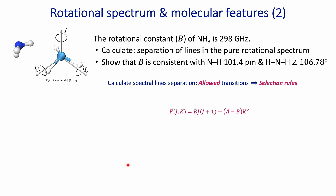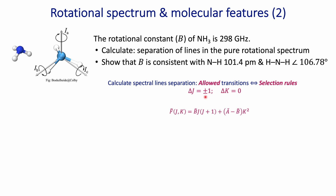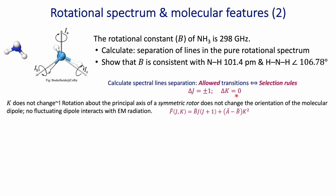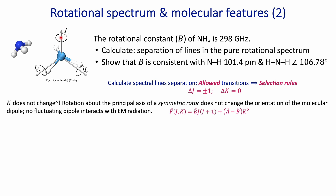Let's calculate the separation between lines in my spectrum. The question is: what are the allowed transitions? I need to apply the selection rules. For this type of molecule, the selection rules are ΔJ = ±1 and ΔK = 0. ΔK = 0 means the quantum number K doesn't change, because rotation about the principal axis of a symmetric rotor does not change the orientation of the molecular dipole in space. Particularly for ammonia, the dipole moment is pointing in the same direction as the principal rotational axis, so any rotation around that axis doesn't change the dipole orientation — there is no fluctuating dipole interacting with electromagnetic radiation — so K does not change.